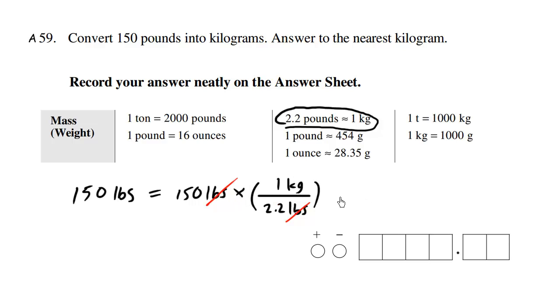So using your calculator, we have 150 divided by 2.2 is approximately 68.18.